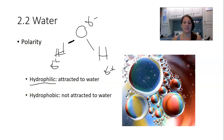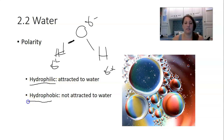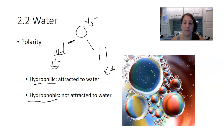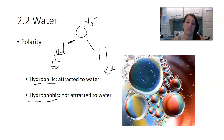Hydrophilic substances are going to want to associate with water, and they're going to do that through hydrogen bonding — through an attraction of either opposite charges or partially opposite poles. Molecules that do not like water are said to be hydrophobic. These are molecules that don't have any partial charge or full charge. Water has both cohesive and adhesive properties that make it really important in some biological systems.